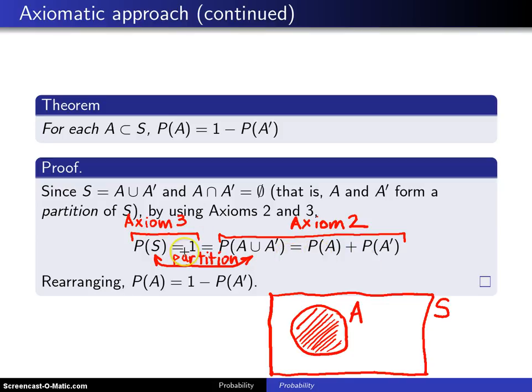all you have to do is take the one right here, and P of A plus P of A prime, put those two together and do a little bit of rearranging, and you come up with the result, P of A is equal to 1 minus P of A prime, which is exactly what we were trying to prove.